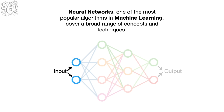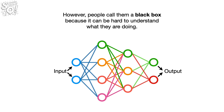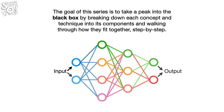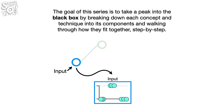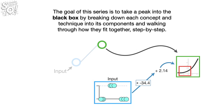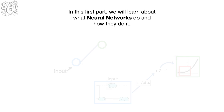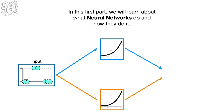Neural networks, one of the most popular algorithms in machine learning, cover a broad range of concepts and techniques. However, people call them a black box because it can be hard to understand what they're doing. The goal of this series is to take a peek into the black box by breaking down each concept and technique into its components and walking through how they fit together, step by step. In this first part, we will learn about what neural networks do and how they do it.